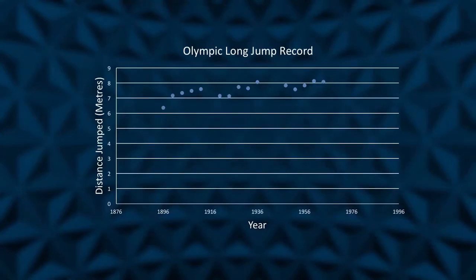Such anomalies can lead to incorrect predictions being made. To highlight this, let's take a look at another Olympic event — the men's long jump. Like the 100m sprint, this event has been part of the modern Olympics since 1896. If the data for the winning jump in the finals is plotted for the years 1896 through to 1964, we can see a definite trend.